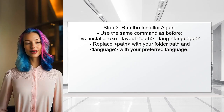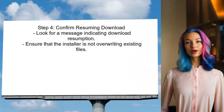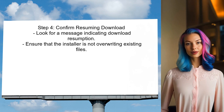Now, run the Visual Studio installer again using the same command you used previously, ensuring you include the layout switch to continue the download. After running the installer, you should see a message indicating that it is resuming the download. This means the installer is recognizing the existing files and will continue downloading the remaining components.